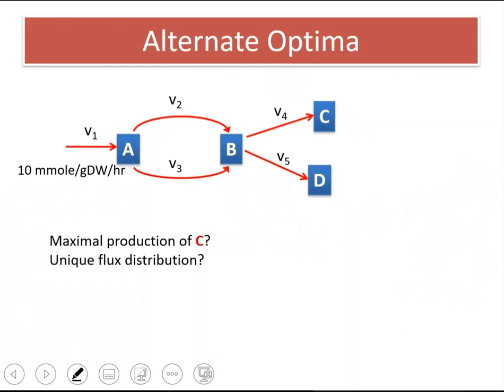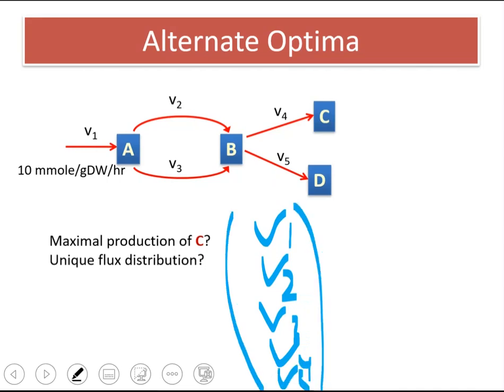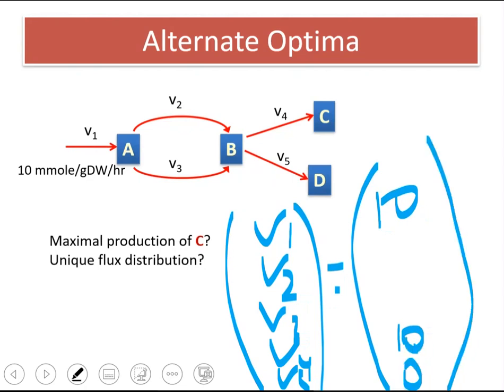But do we have a single flux distribution to satisfy this? Let's say this is our vector V1, V2, V3, V4, and V5. This is our solution vector. We know that V1 is 10. We know that V4 will be 10 and V5 will be 0 for the optimum solution. What about V2 and V3?